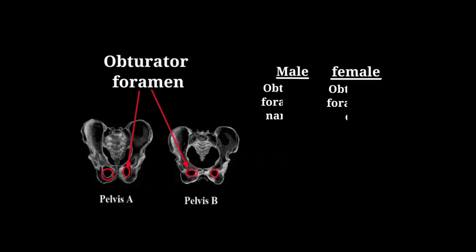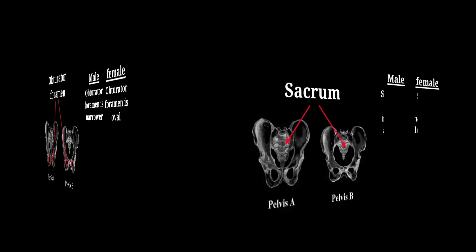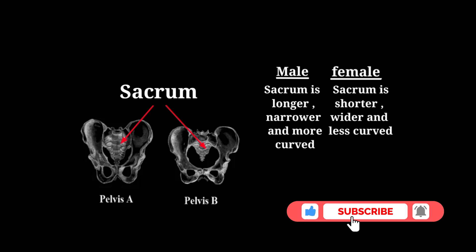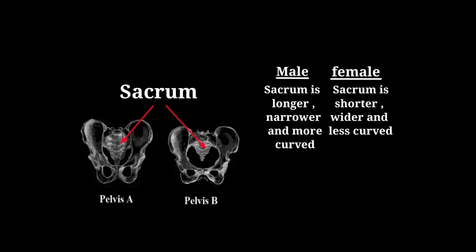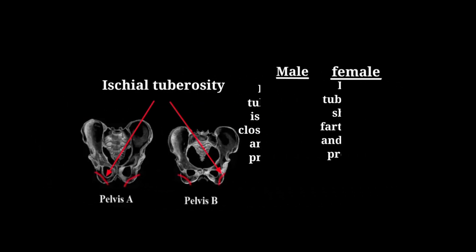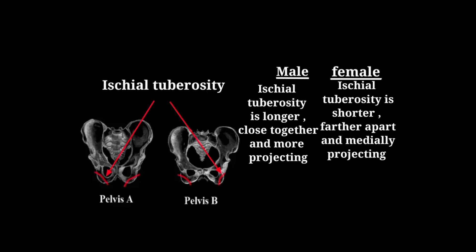The obturator foramen is narrower in the male pelvis; the obturator foramen is oval in the female pelvis. The sacrum is longer, narrower, and more curved in the male pelvis. The sacrum is shorter, wider, and less curved in the female pelvis. The next point is the ischial tuberosity. The ischial tuberosity is longer, close together, and more projected in the male pelvis.